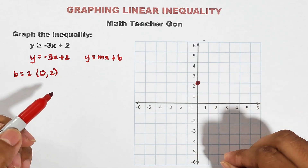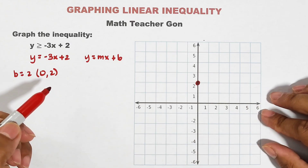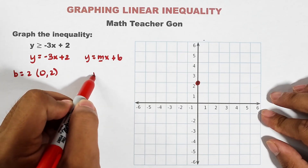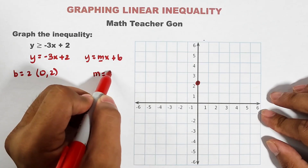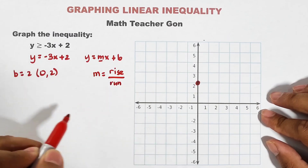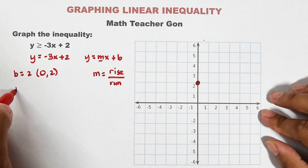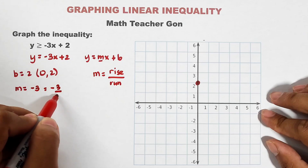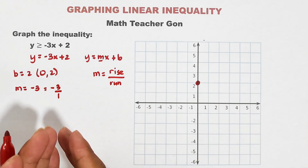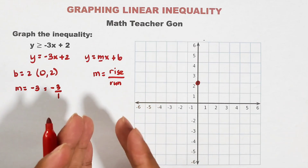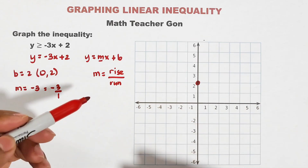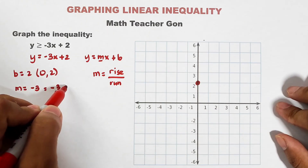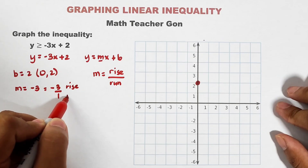Next, to graph a line we need at least two points. To get the second point, we use the slope m, which is equal to the rise over the run. Here your slope is negative 3, which is the same as negative 3 over 1. We need to express the slope in fractional form to get the second point using the rise over run concept. So we have negative 3 over 1 — this is your rise and this is your run.